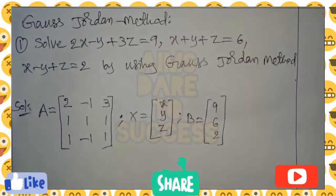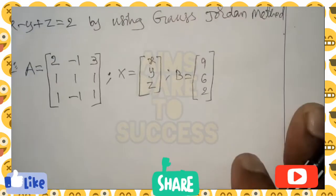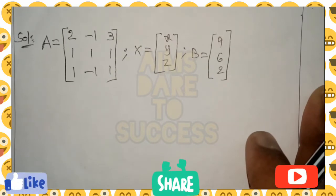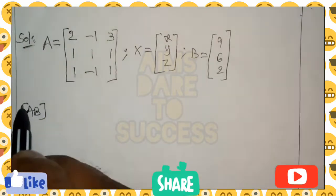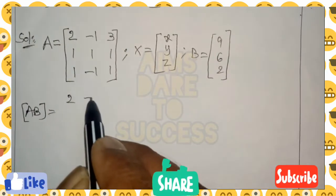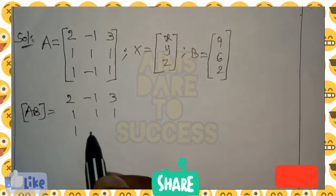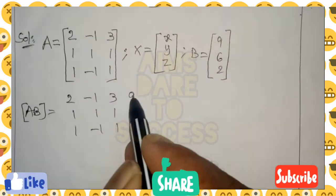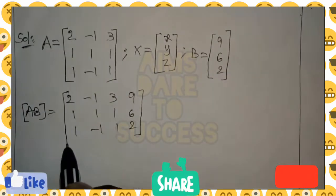After writing A, B, and X matrices, you can write A and B in one matrix only — the combination of A and B matrices. We get: 2, minus 1, 3; next 1, 1, 1; next 1, minus 1, 1. The fourth column is the B value: 9, 6, 2. This is the augmented matrix.